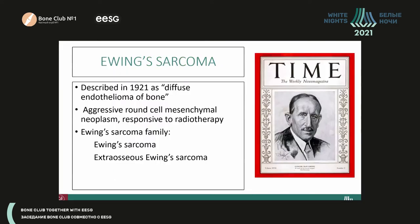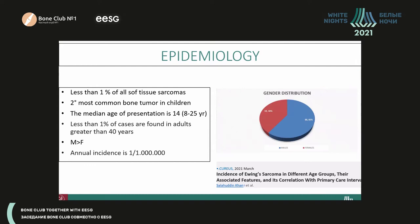Ewing's sarcoma was first described in 1921 by Dr. James Ewing. Initially it was called diffuse endothelioma of the bone, since the cells looked like endothelial cells of vessels of the bone. Dr. Ewing understood that this was a new neoplasia, different from osteosarcoma, but responsive to radiotherapy — though it was a really aggressive neoplasia. It is the second most common bone tumor in children.